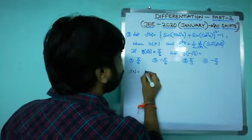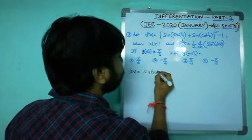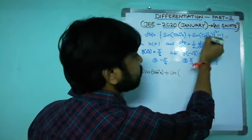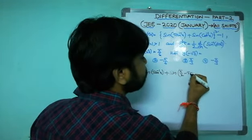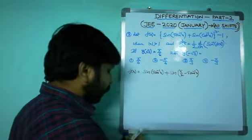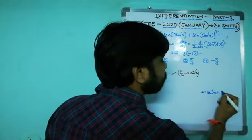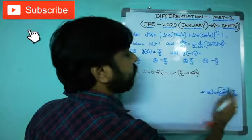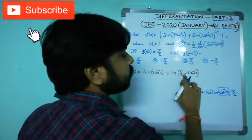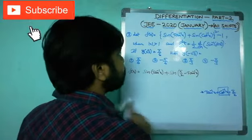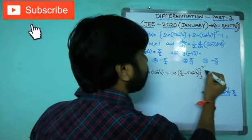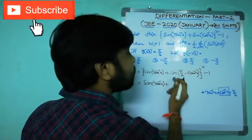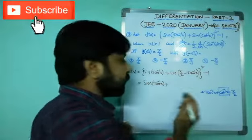f(x) = sin(tan⁻¹x) + sin(cot⁻¹x). Using the identity tan⁻¹x + cot⁻¹x = π/2, we get cot⁻¹x = π/2 - tan⁻¹x. Substituting: f(x) = [sin(tan⁻¹x) + sin(π/2 - tan⁻¹x)]² - 1.